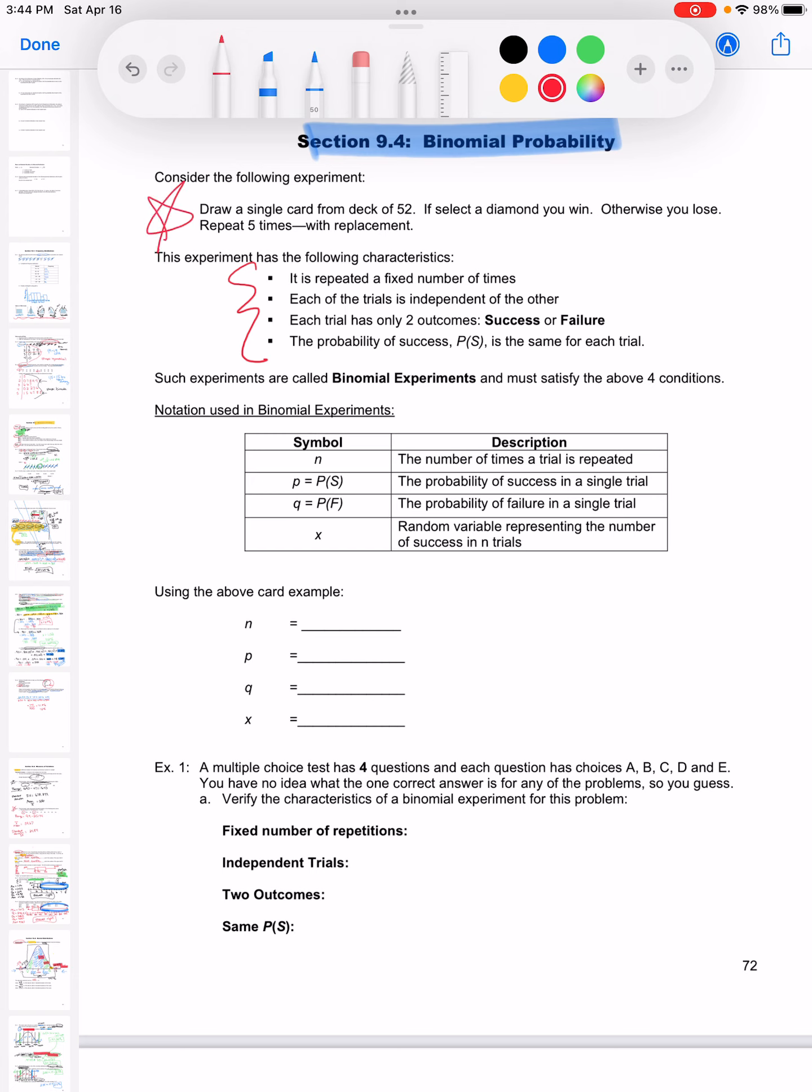I've got an example up here at the top. We're going to draw a card from a deck and we're going to try to select a diamond, and we're going to repeat this five times. A key word to make this one a binomial is we're going to have to replace the card, so we're going to look at the card and put it back. So there's always going to be 52 cards in the deck. That's what's going to make this one a binomial probability as compared to when we've just been drawing more than one card out - those would not be because we wouldn't be putting them back, so the amount of cards in the deck changes.